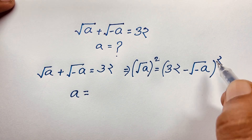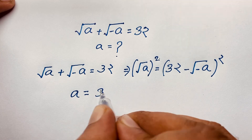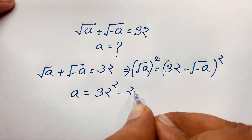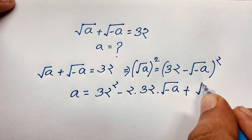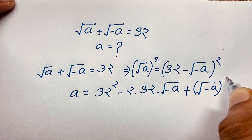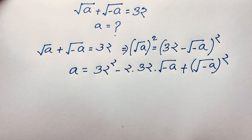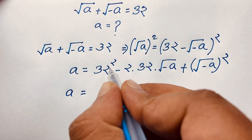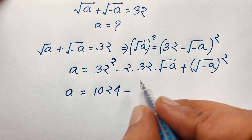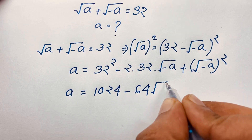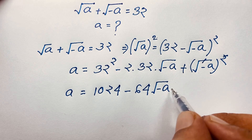We know that (A minus B) whole square equals A squared minus 2AB plus B squared. According to this law, it will be 32 squared minus 2 times 32 times square root minus A, plus square root minus A whole squared. So A equals 1024 minus 64 times square root negative A, and that square root squared gives negative A.